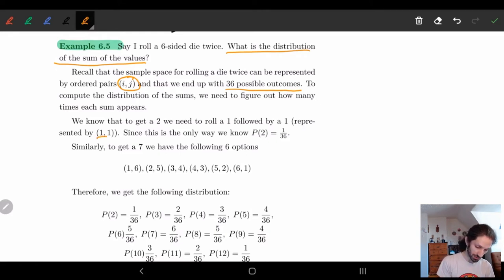So this is represented by (1,1). And so since this is the only option, what this gives us is we end up having that the probability of two is equal to one over 36. This is just the basic definition of probability. Here we have the size of A over the size of omega.